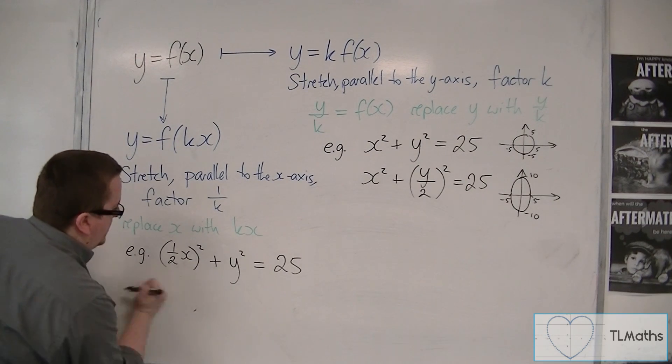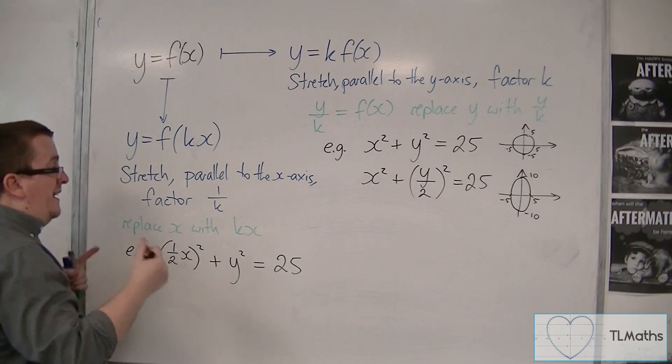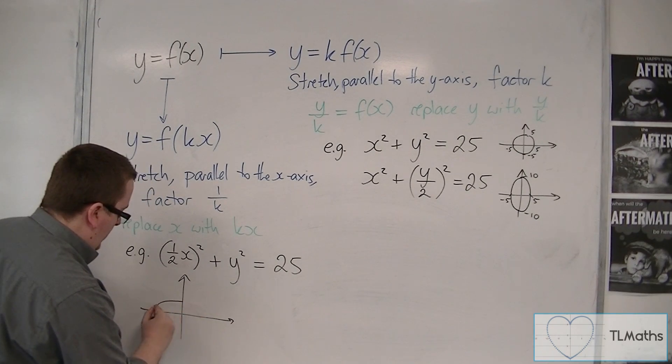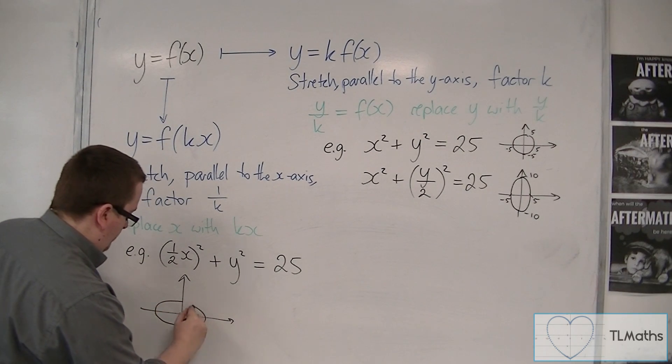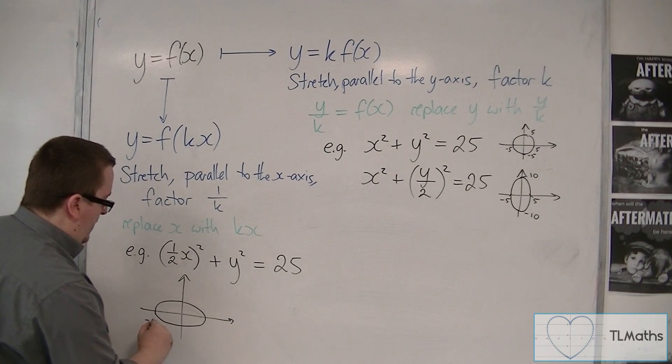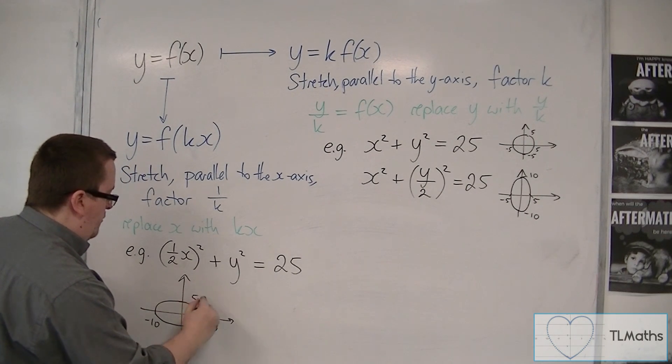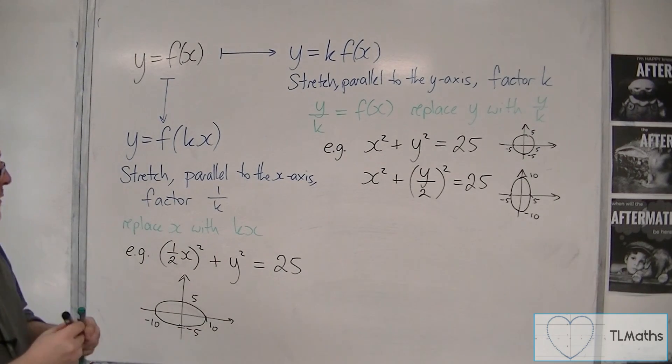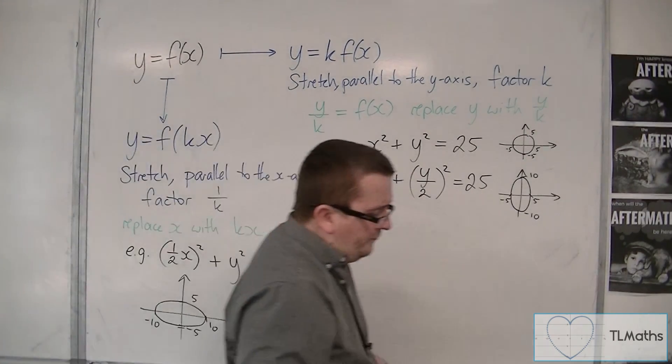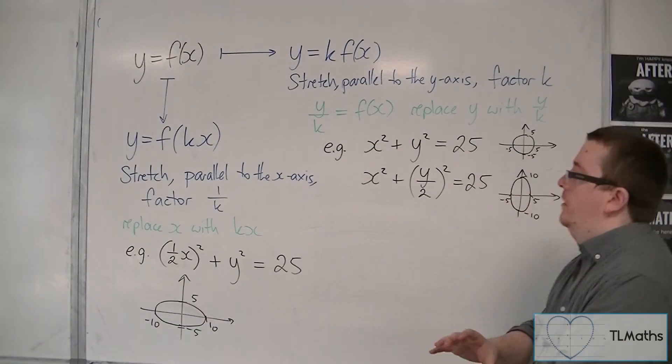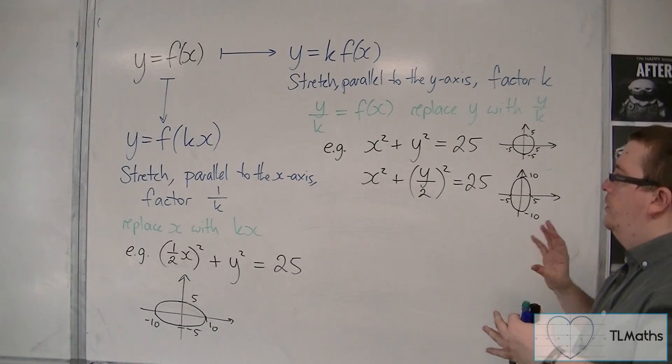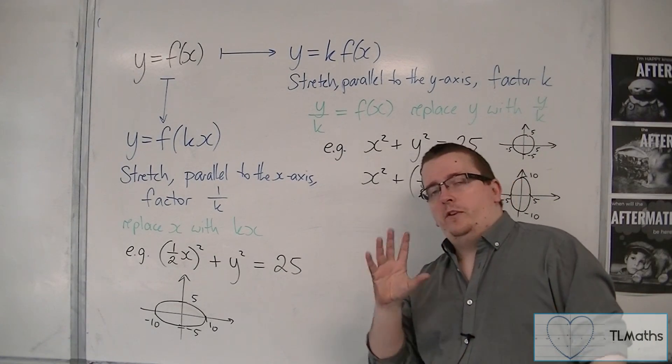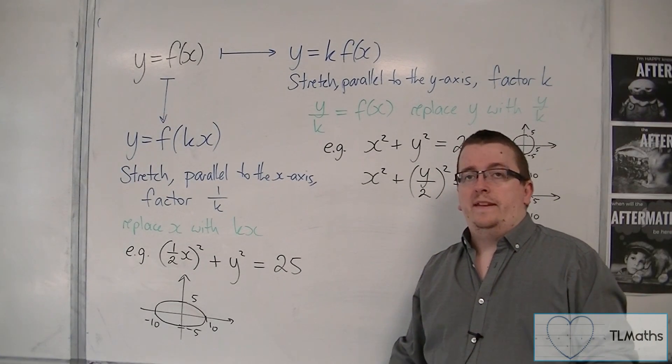So that would give you an ellipse, which would look like this. So it's now going through minus 10 and 10 on the x-axis, but still going through 5 and minus 5 on the y-axis. So that is in general how stretches work. And I'm going to show you an exam-style question in the next video.